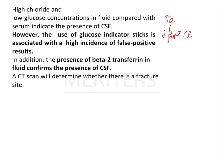However, the use of glucose indicator sticks is associated with a high incidence of false positive results. This is because glucose indicator strips containing glucose oxidase are highly sensitive and will turn positive even with very small amounts of glucose. Therefore, this cannot be used reliably. On the other hand, the presence of beta-2 transferrin is the most useful test for detecting CSF leakage through the nose.